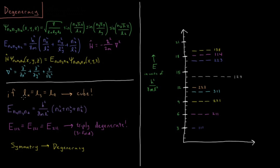If we have lx equals ly, but they're not equal to lz, we have less degeneracy. But making these all three equal, making it a cube, gives us the most possible degeneracy for the particle in a box in three dimensions.